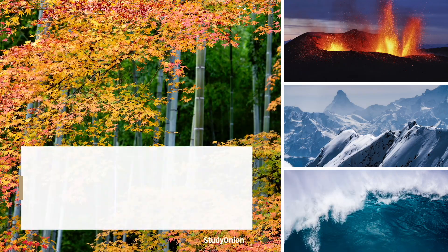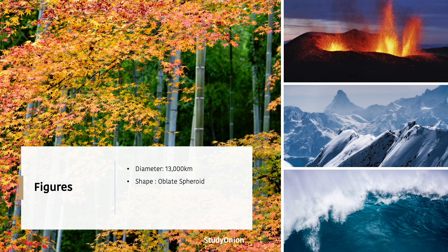Let's take a look at some of the facts and figures about the Earth. The Earth has a mean diameter of 13,000 kilometres, making it the largest of the terrestrial planets, which include Mercury, Venus, Earth and Mars. The shape of the Earth is known as an oblate spheroid, which basically means it looks like a slightly squashed oval.